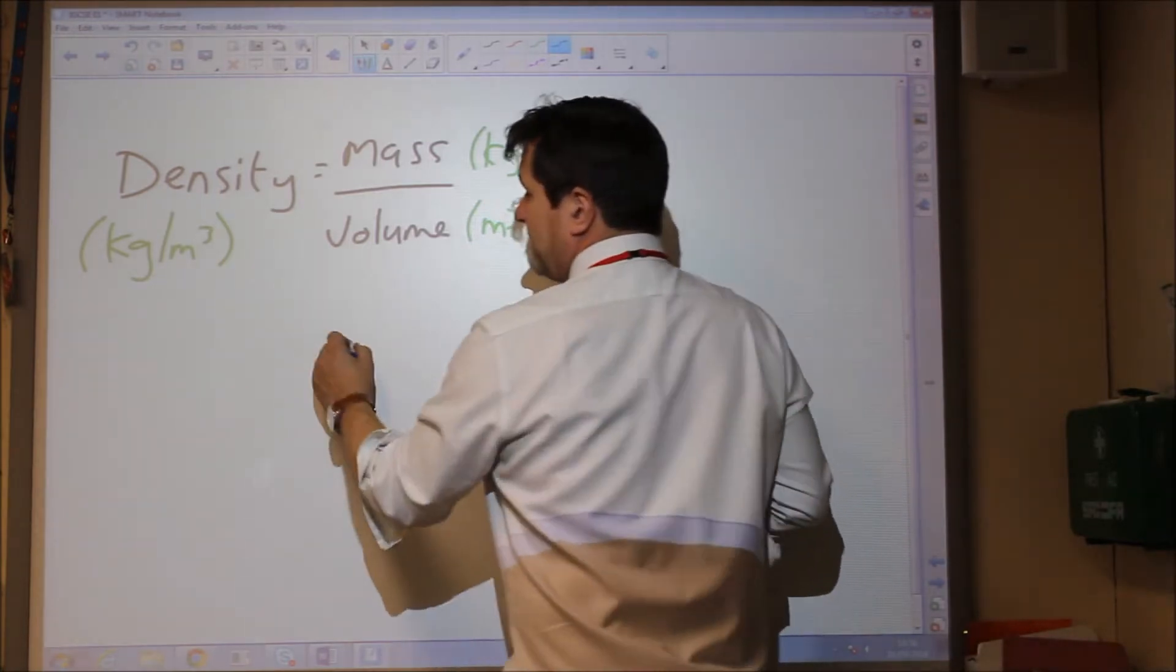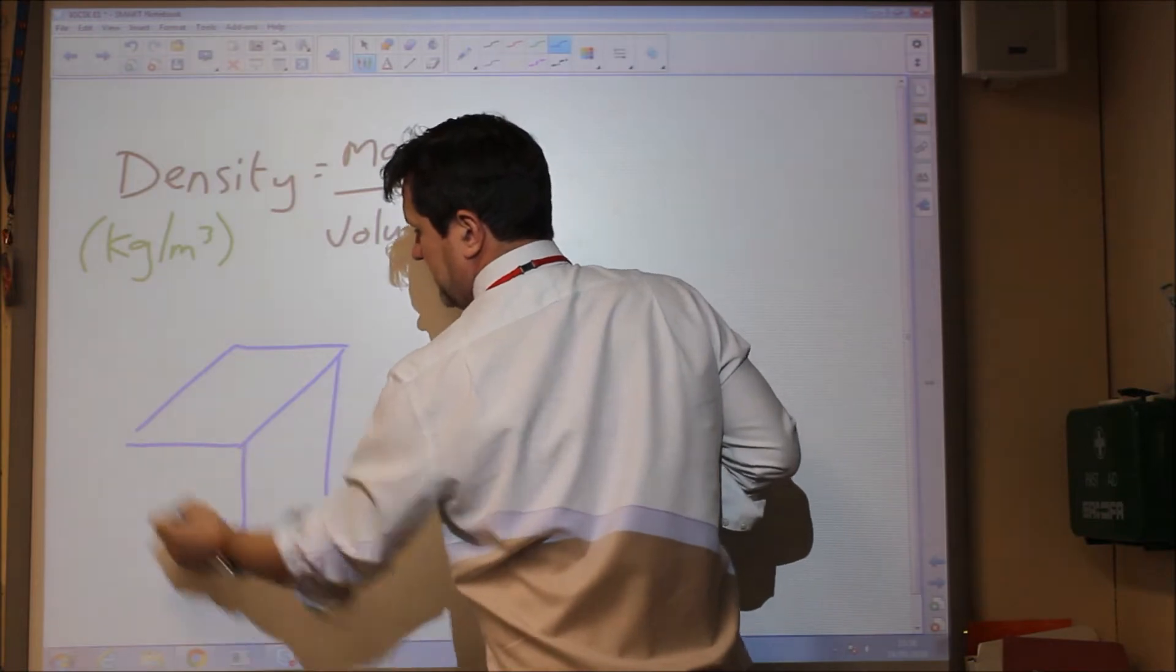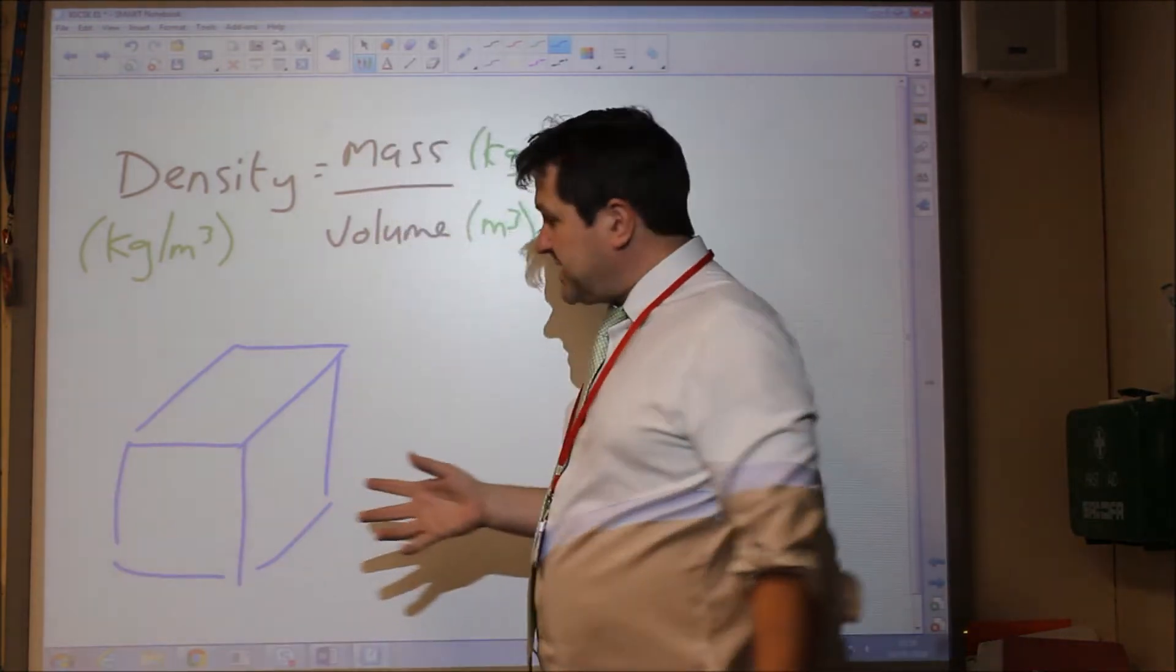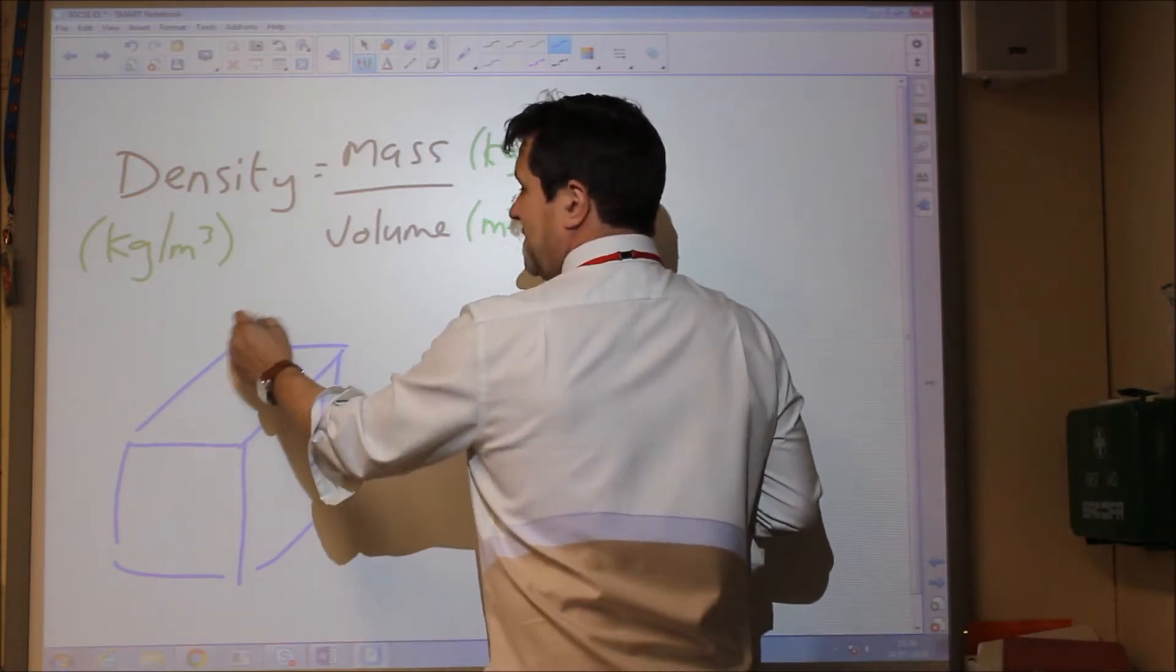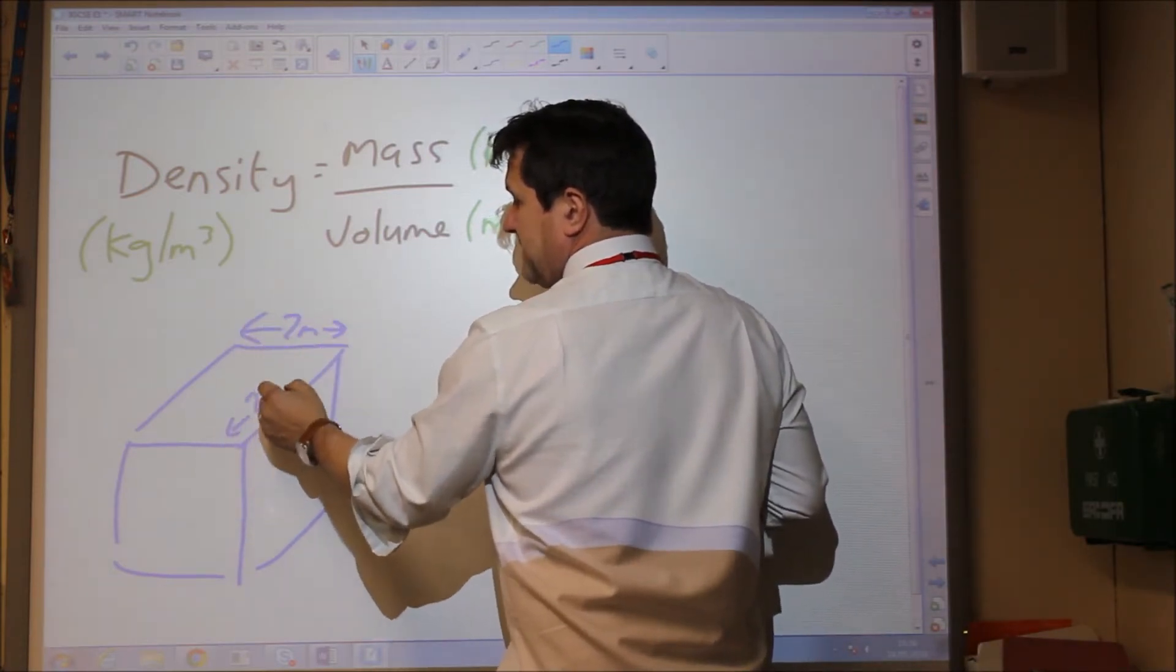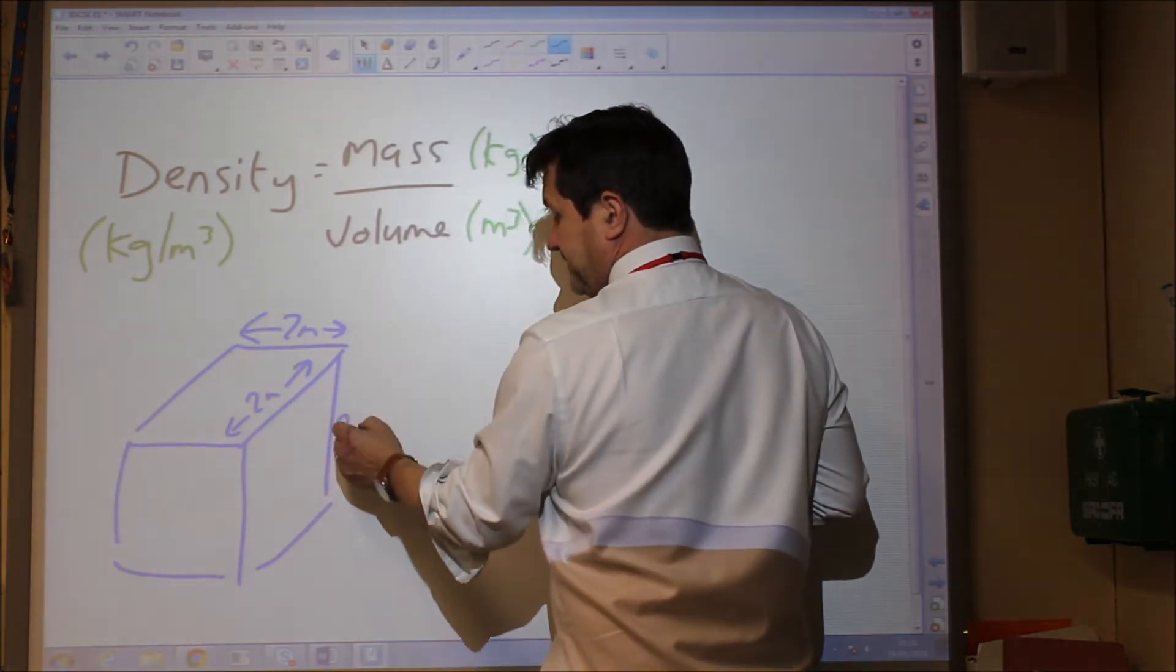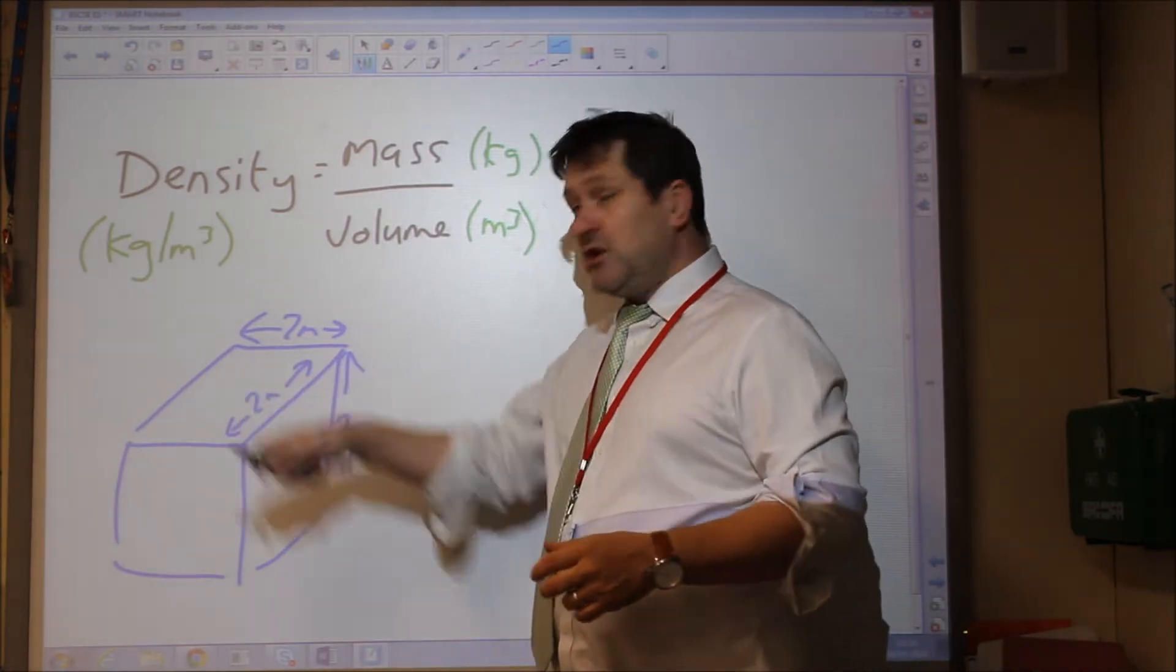So if, for example, we've got a shape such as this. Now if we're given dimensions of the shape, so if they said, for example, we've got two metres by two metres by two metres, we could easily work out the volume of this cube,